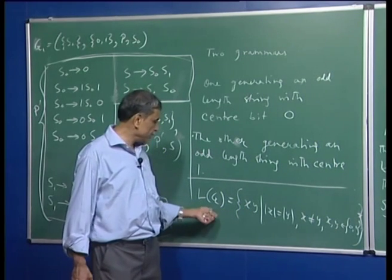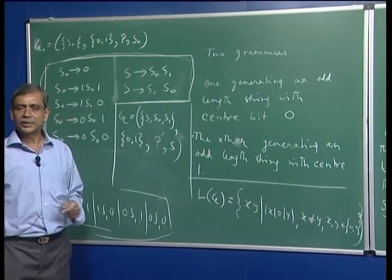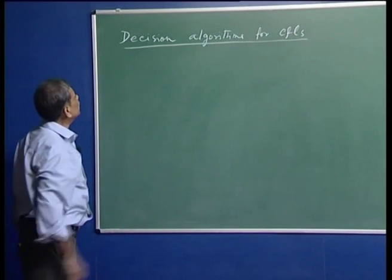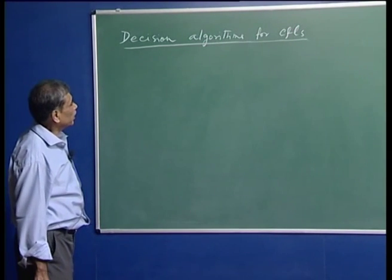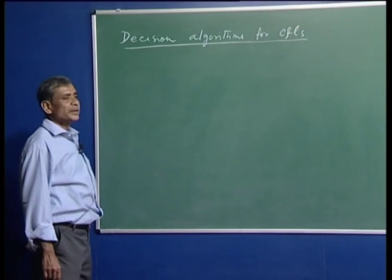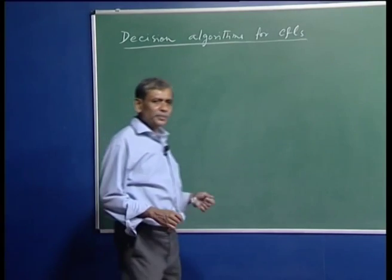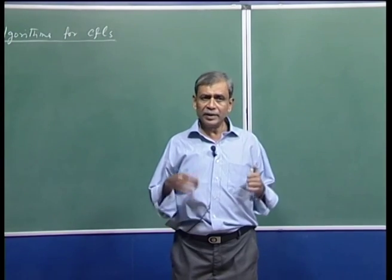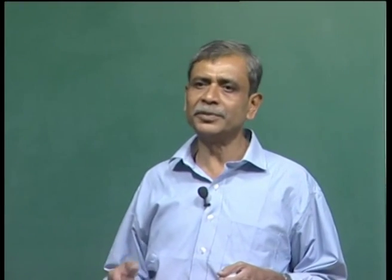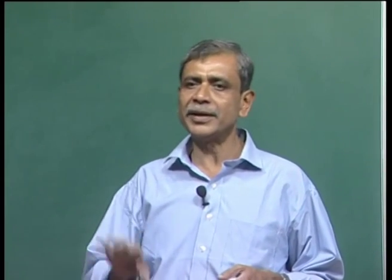The language generated by this grammar is indeed L2 — the set of all strings XY where X and Y have equal lengths, are binary strings, and X ≠ Y. By our analysis and way of viewing the string, we arrived at a fairly simple grammar to generate this language. Since we generated L2 using a context-free grammar, L2 is a context-free language. Now we consider another subtopic: decision algorithms for context-free languages.